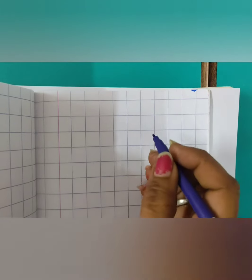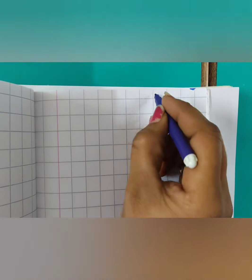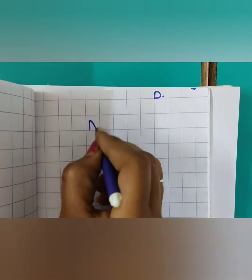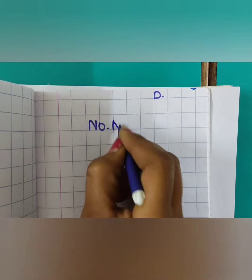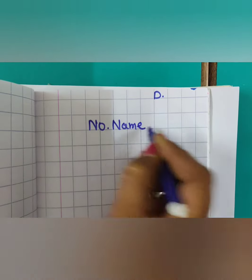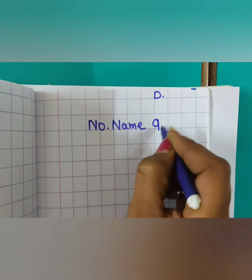Now open your miss note book. We will write the date, heading, and number name 90.